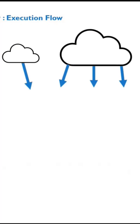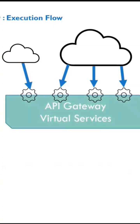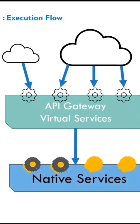The inbound traffic enters from the cloud, or could be within your organization. This reaches the API gateway where our virtual services are actually exposed — this is the place where our actual APIs are going to be onboarded. Behind the virtual services is the actual native service for which we are going to build an API.